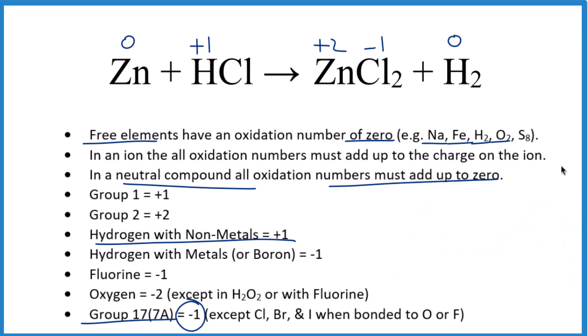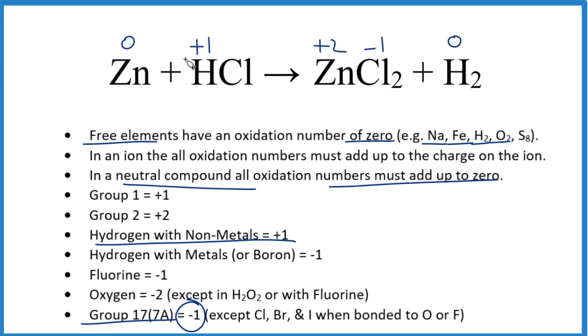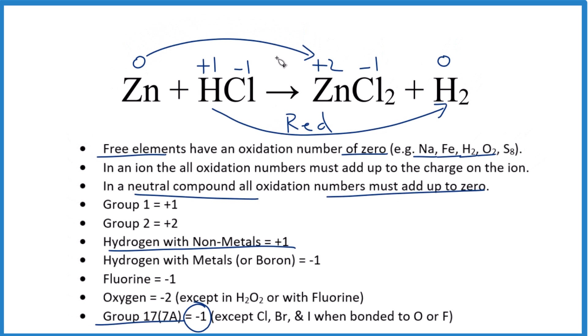So at this point, we can see that the oxidation numbers change. Zinc goes from zero to plus two. Hydrogen goes from plus one to zero. Chlorine stays the same, that's negative one. This number got smaller, plus one to zero, that got reduced, that's our reduction. Up here we went from zero to plus two, that got bigger, that's oxidation. If we have reduction and oxidation, we do have a redox reaction.